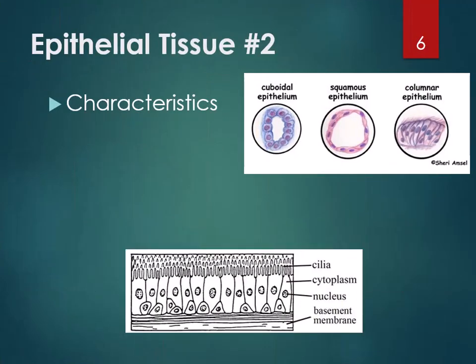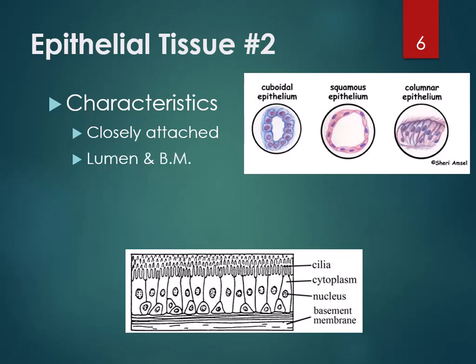Some characteristics of epithelial tissue: the cells are tightly connected to each other with no spaces in between. It has a lumen or space on one side, and is attached to the tissue underneath via a basement membrane (BM). Looking at the picture, the cells have nuclei in the middle, cilia on top, a space above, and underneath the cell layer is the basement membrane which attaches it to the cells below.